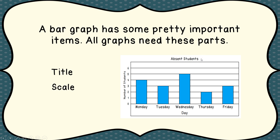We also need to have a scale. Those are the numbers that, depending on whether it's a horizontal or vertical graph, tell you what each one of these lines is worth. In this particular case, it goes 1, 2, 3, 4, 5, 6, all the way up. So each line is going to be worth one student.